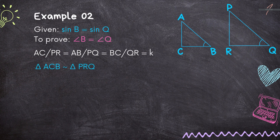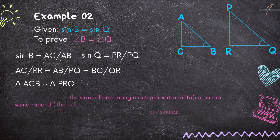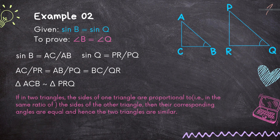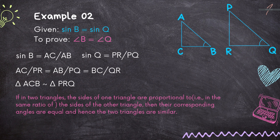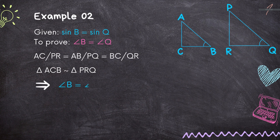Thus triangle ACB and triangle PRQ are similar. If in two triangles the sides of one triangle are proportional to the sides of the other triangle — that is, they are in the same ratio — then their corresponding angles are equal and hence the two triangles are similar. Thus angle B is equal to angle Q.